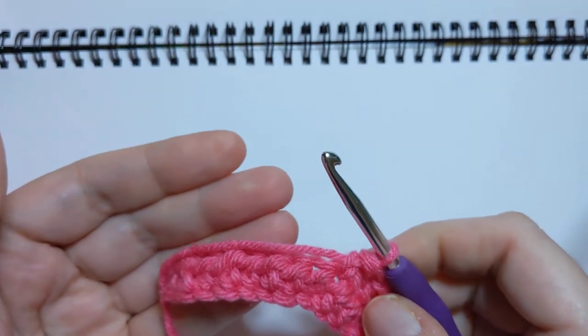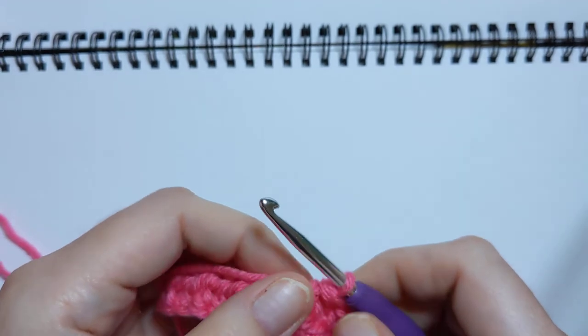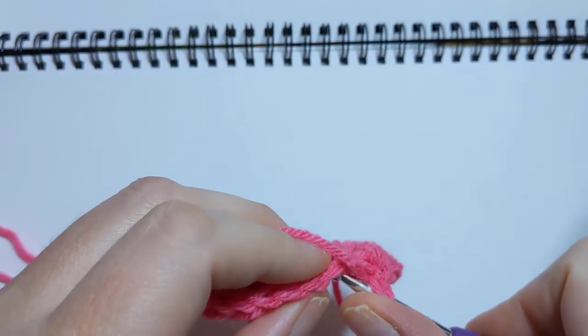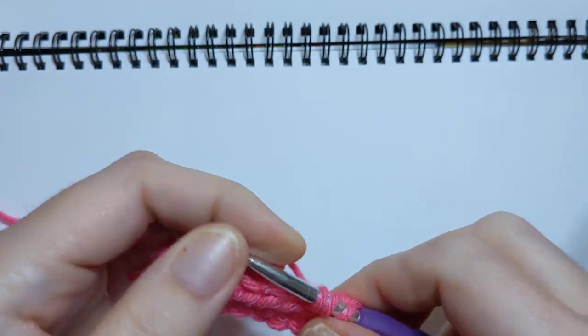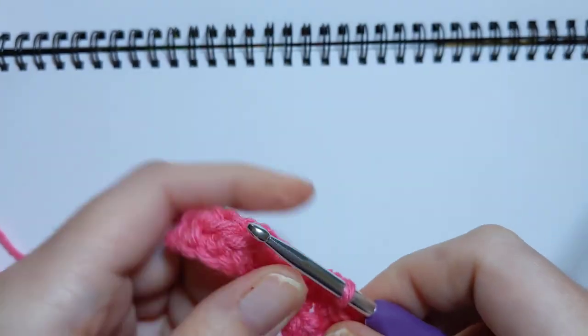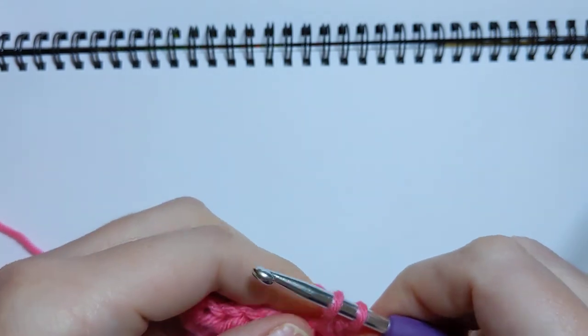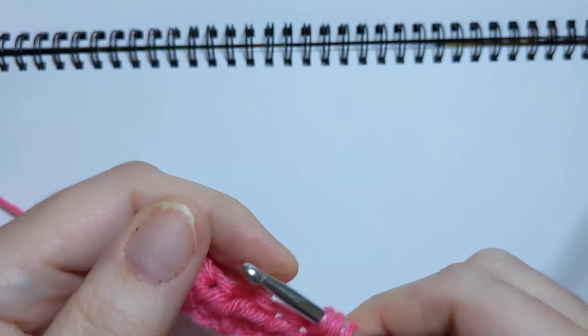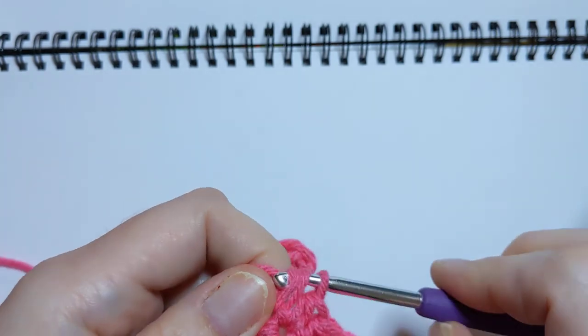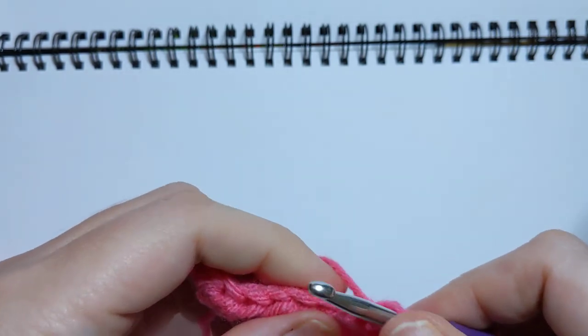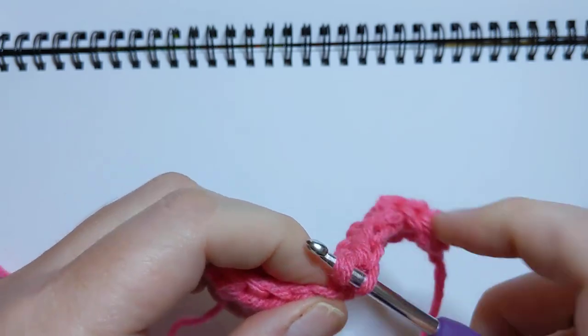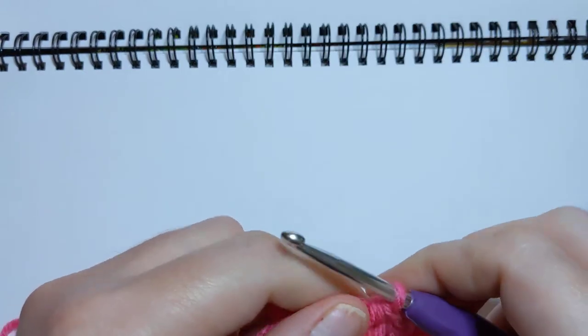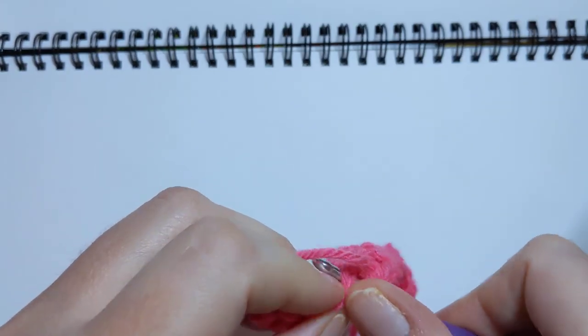Now I'm going to go through the rest of this row with just half double crochets, so you can see that we will have one less stitch than we had when we started off. And here I'm just doing plain old half double crochets. I'm just doing a yarn over, go into the stitch, pull up a loop, yarn over, and pull through all three on my hook.